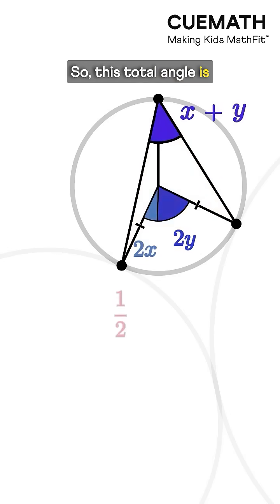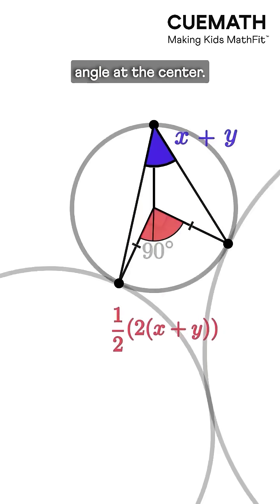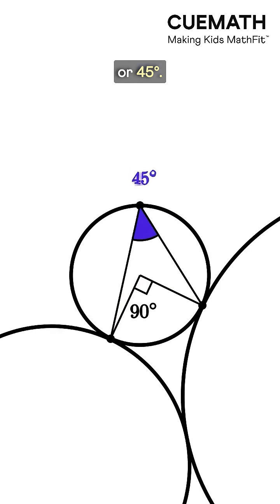So this total angle is half of the total angle at the center. Hence, this angle must be half of 90 or 45 degrees.